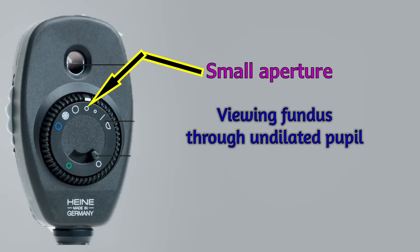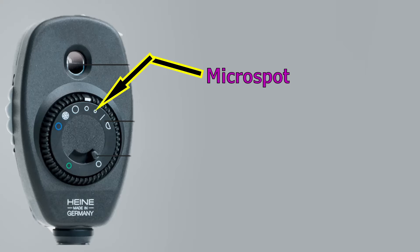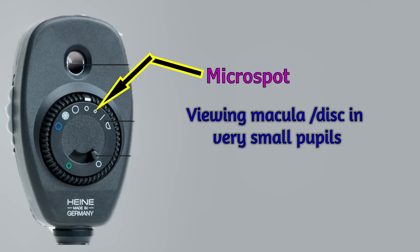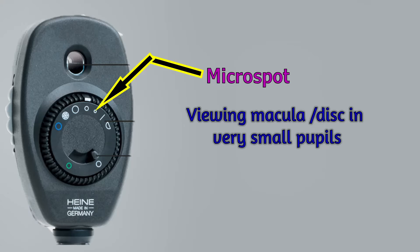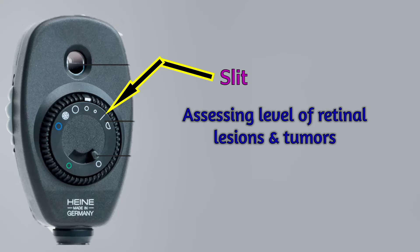For a subject within four diopters of emetropia, this spot is approximately just smaller than an average-sized optic disc, so a rough estimate of disc size may be made. A micro spot is available for viewing the macula or the fundus in very small pupils. A slit aperture helps in assessing the level of retinal lesions and tumours.